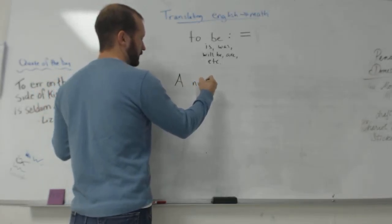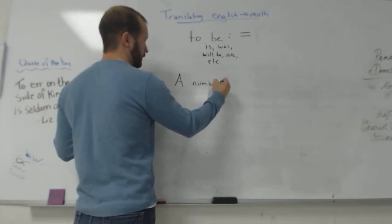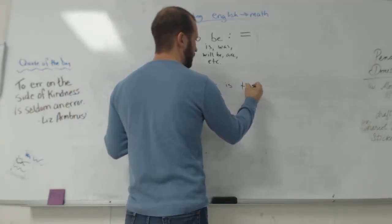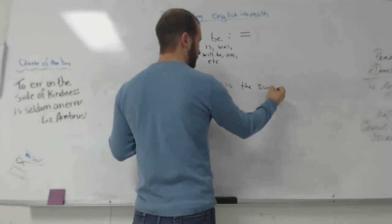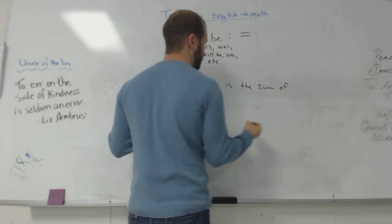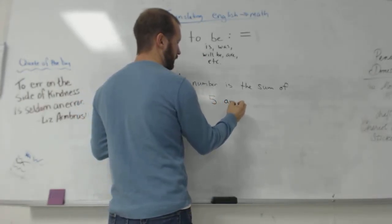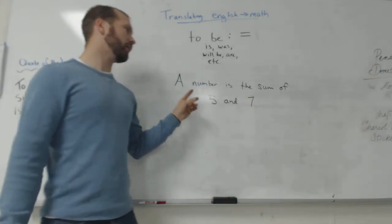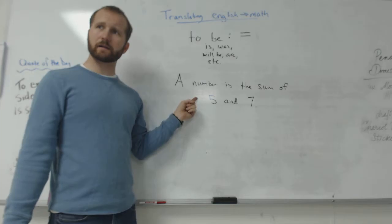Any form of that means equals. So if I say, a number is the sum of five and seven, how can I write this as a mathematical statement?